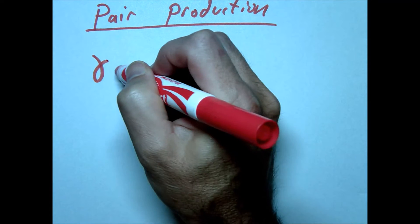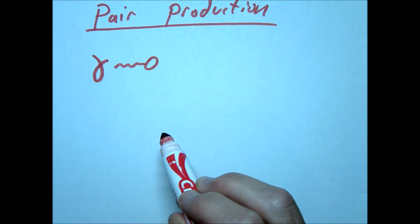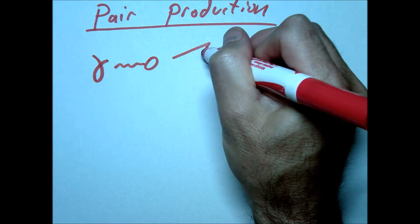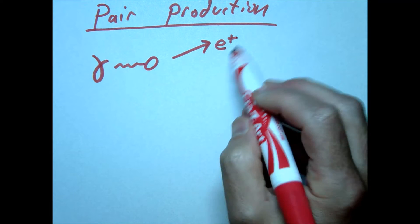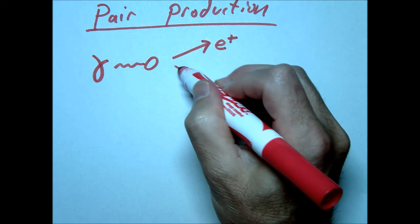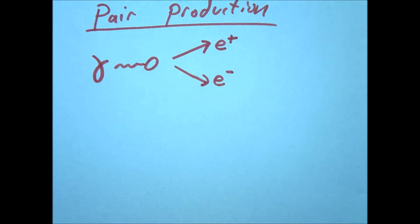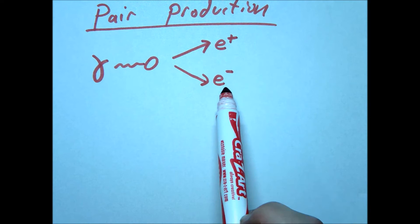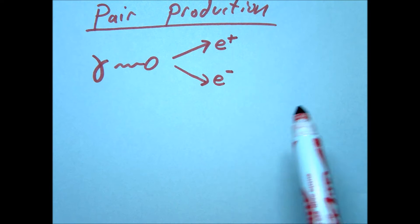Let's imagine, for example, we have a gamma ray traveling. This gamma ray can spontaneously produce two particles. For example, it can produce a positron and its antiparticle, which would be an electron. It could also produce a proton and an antiproton. It needs to produce two because we need charge to be conserved, so that's why we have our particle and our antiparticle.